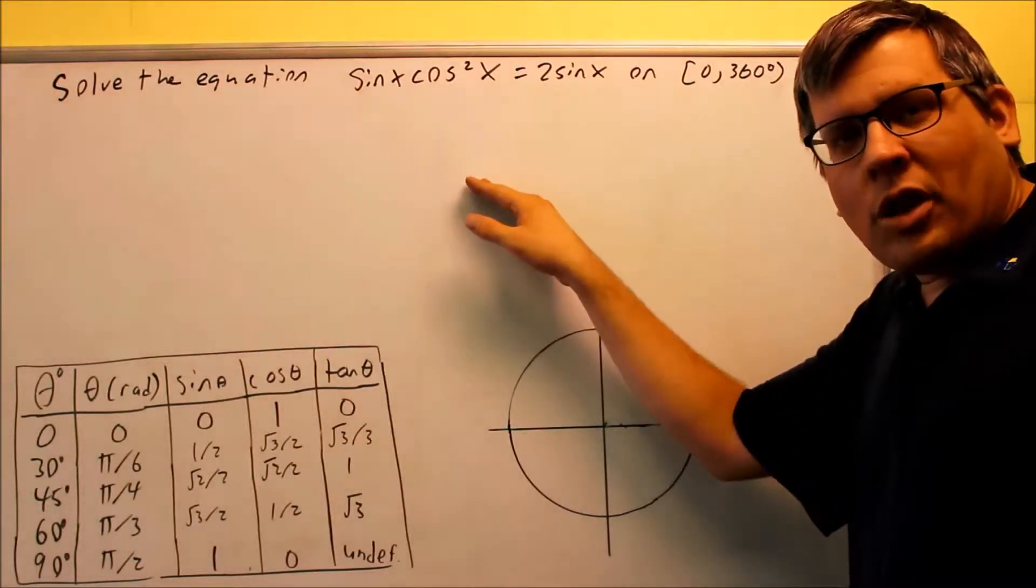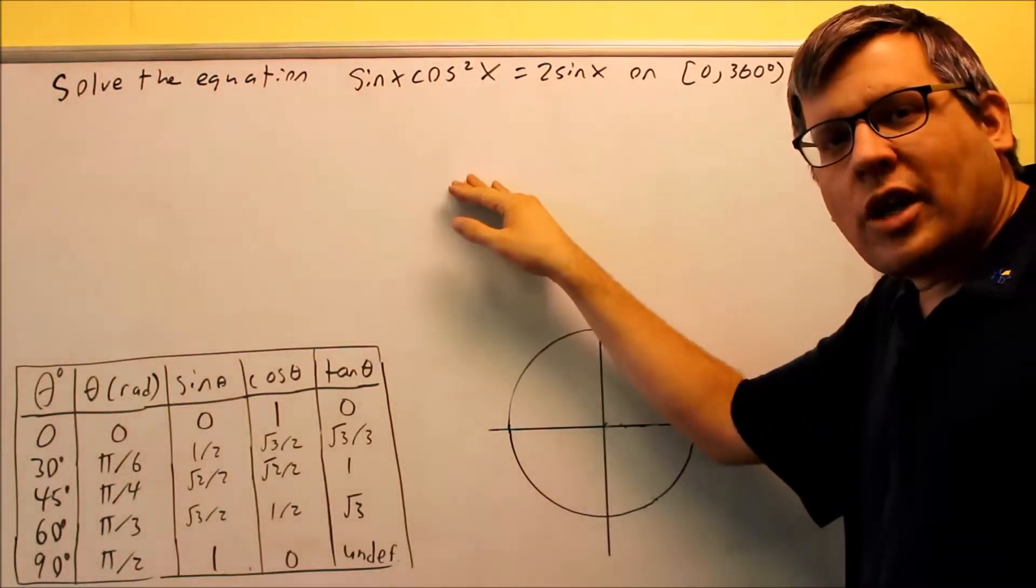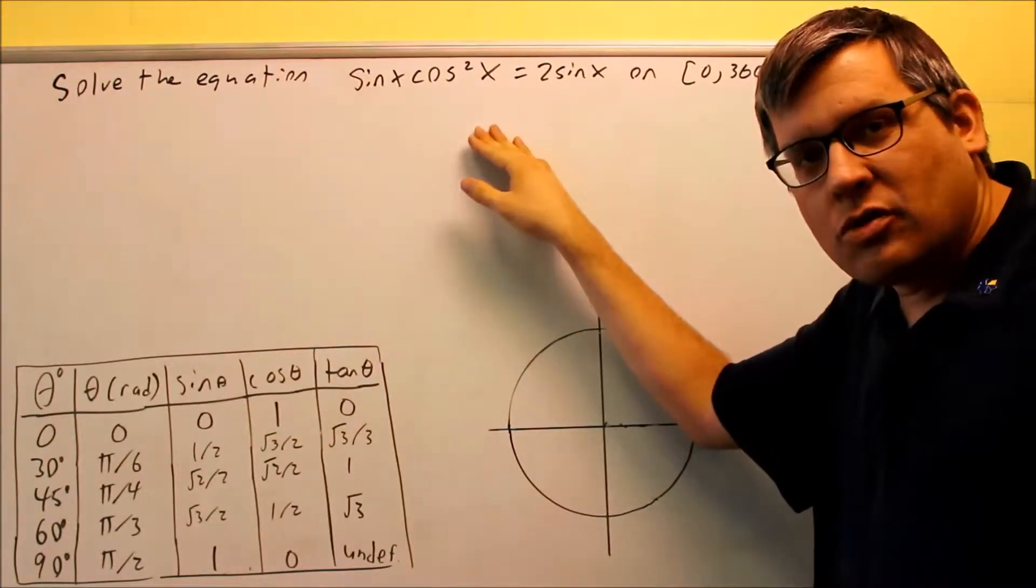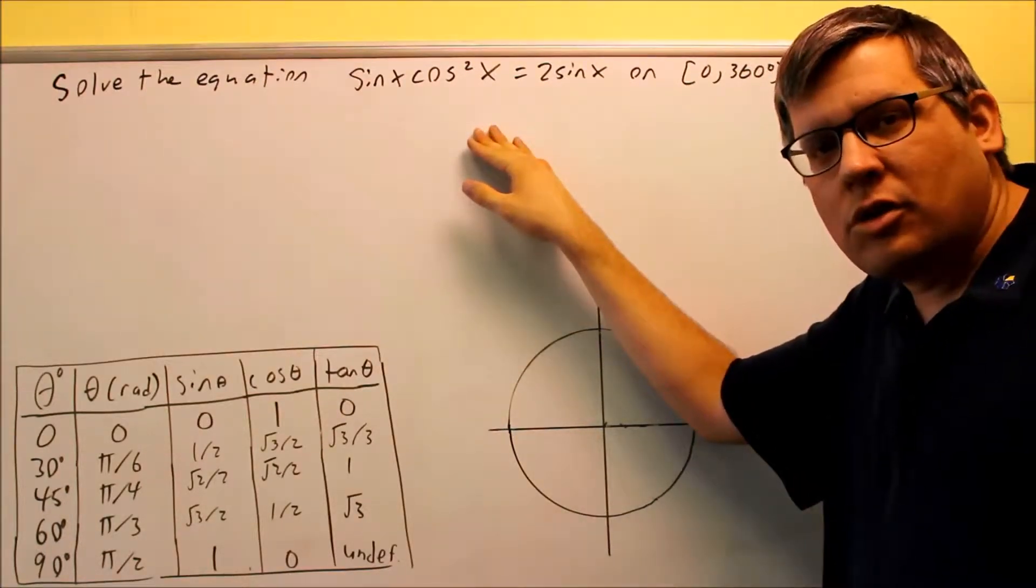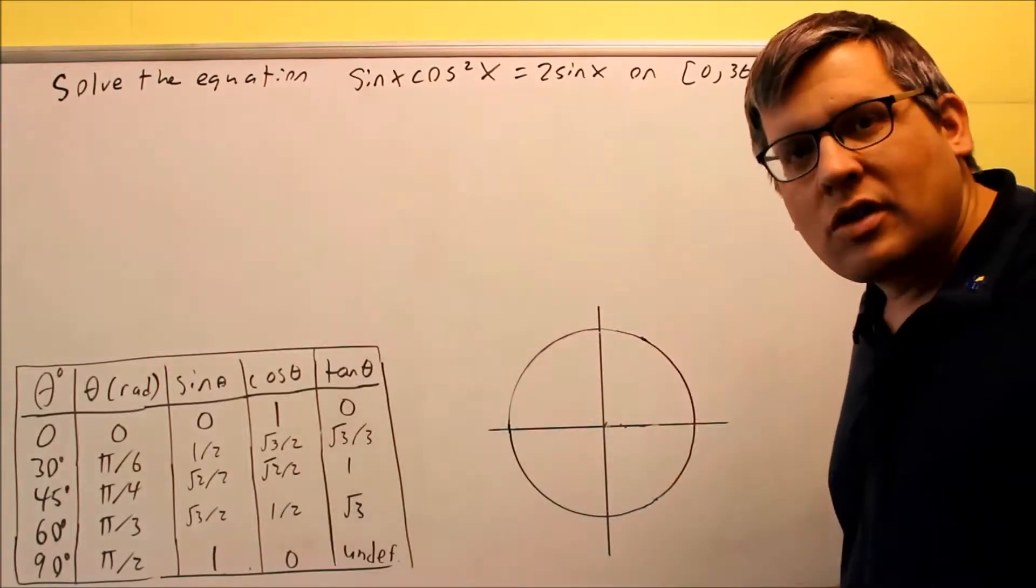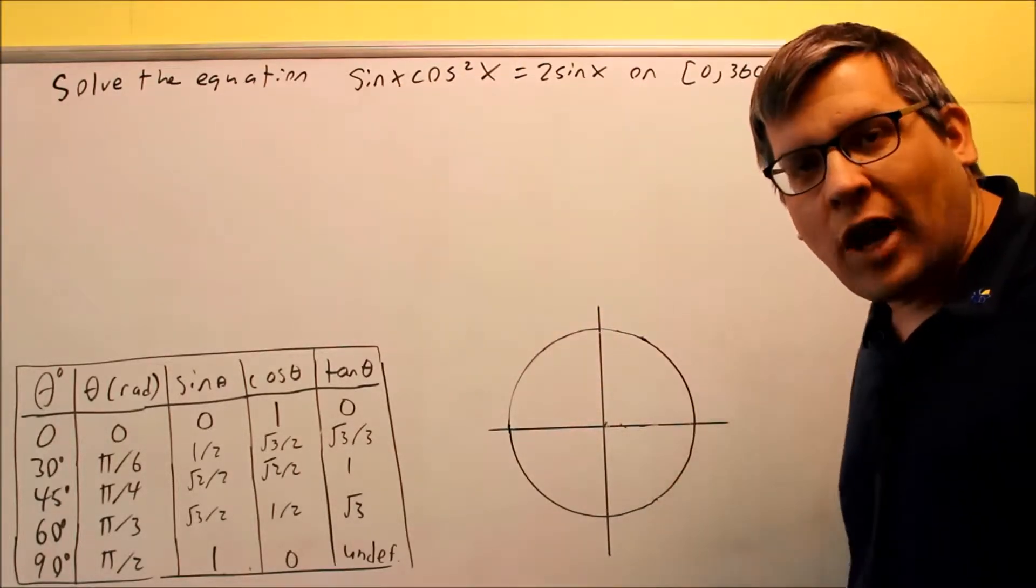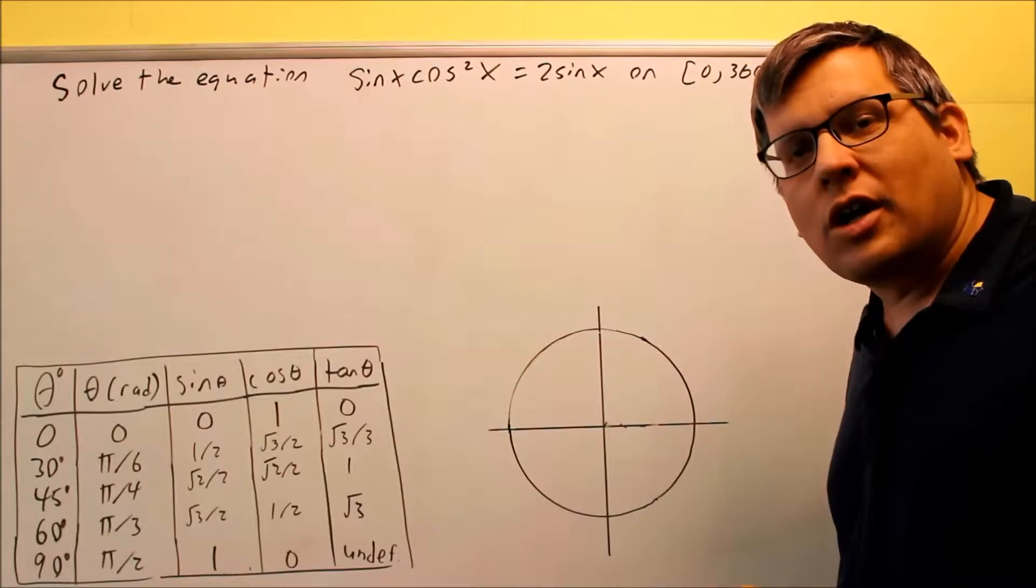For this problem, what I notice is different about the previous examples is this one is not set equal to zero. So if it's not set equal to zero, that's going to be your first step. You want to make sure that you bring everything over, set equal to zero, because that way you can factor and set them equal to zero and get the answer.